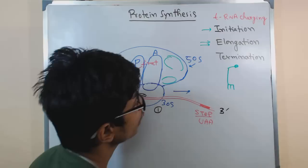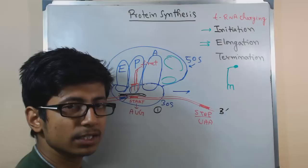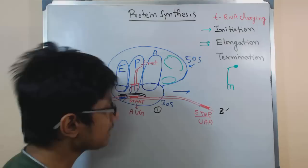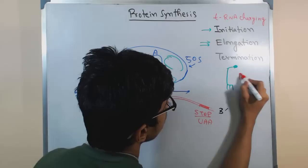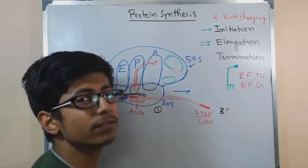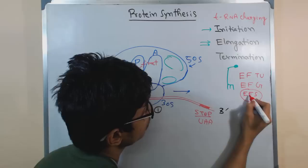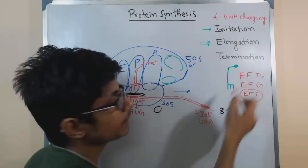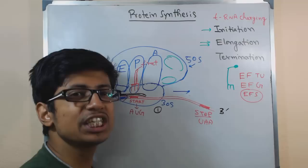A tRNA cannot itself come and attach with the A site — it requires energy for this process. The energy is provided by elongation factors. There are two main types of elongation factor required: elongation factor Tu and elongation factor G, written as EF-Tu and EF-G. There is also another factor called EF-Ts. EF-Tu and EF-G are both GTPase proteins.